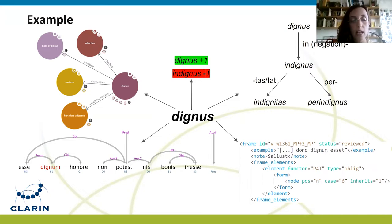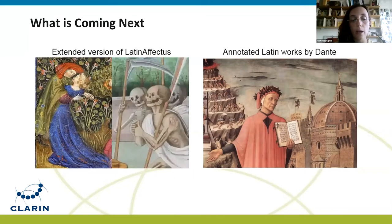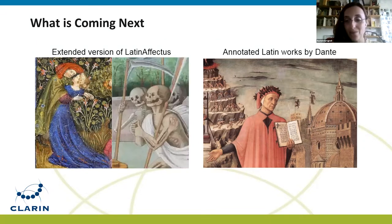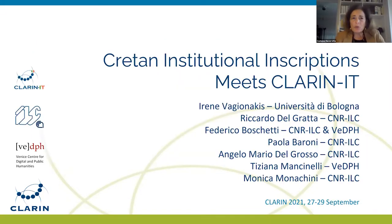The two forthcoming resources are: an extended version of the polarity lexicon, and an annotated corpus of Dante Alighieri's Latin works annotated with part-of-speech, lemma, and syntactic information. Thank you.